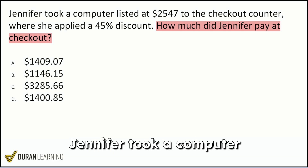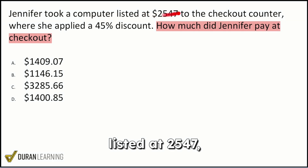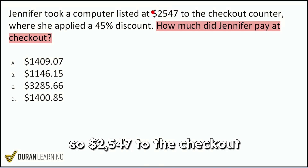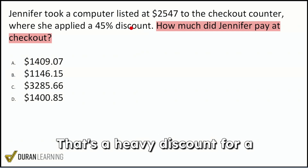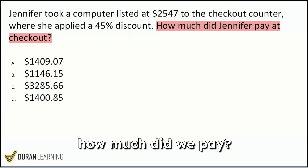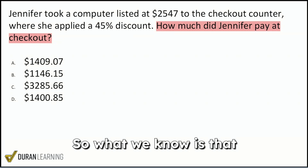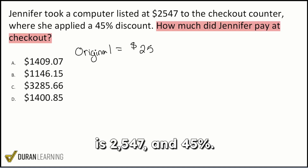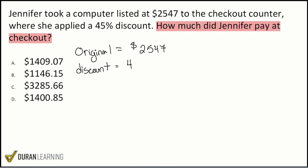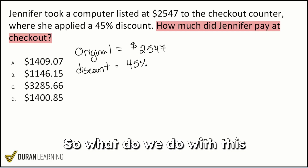We read that Jennifer took a computer listed at $2547 to the checkout counter, where she applied a 45% discount. That's a heavy discount for a computer! So what we know is that the original price is $2547 and then we have a discount of 45%. So what do we do with this information?